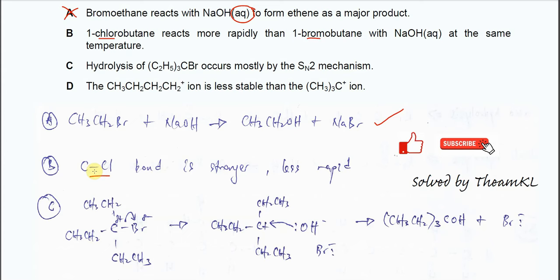When the C-Cl bond is shorter, the bond is stronger. When the bond is stronger, it's harder to break and less rapid than one-bromobutane. So B cannot be accepted. It's incorrect.